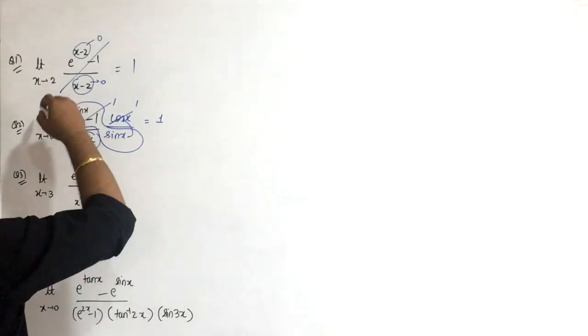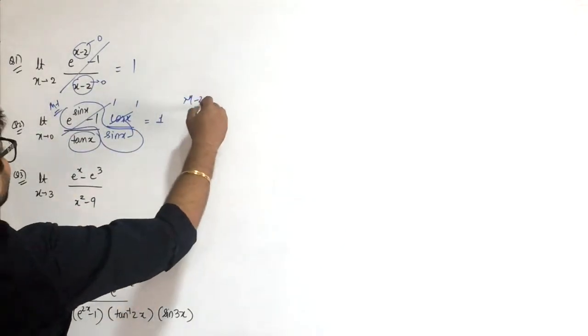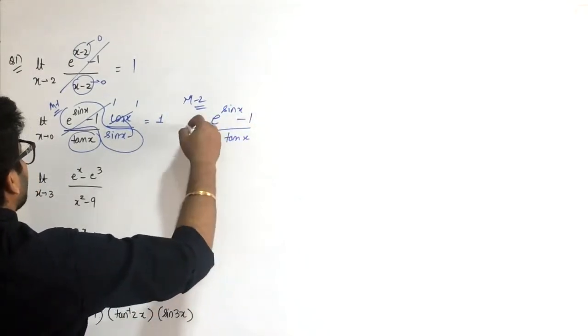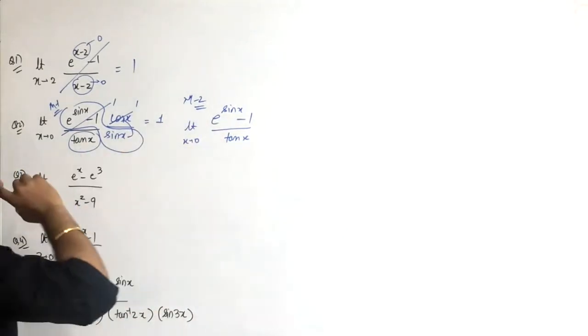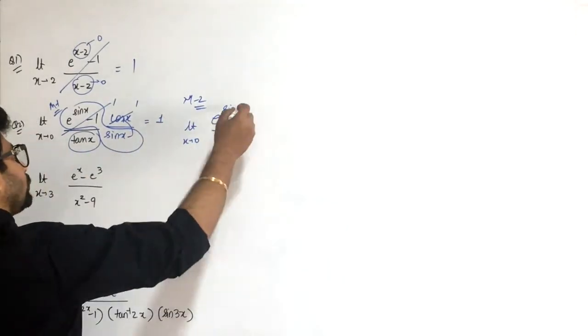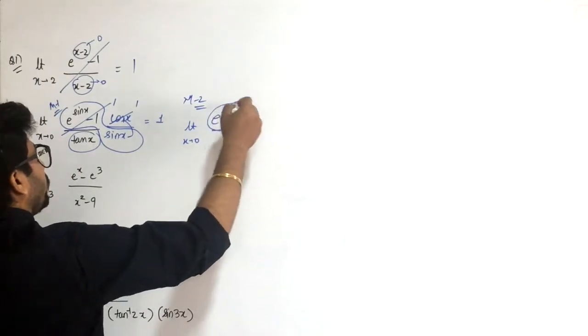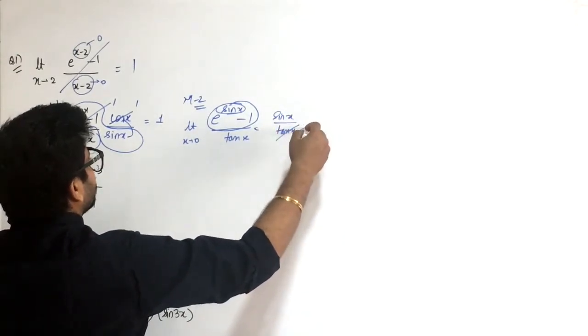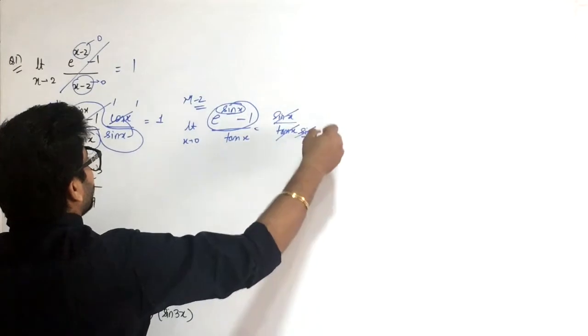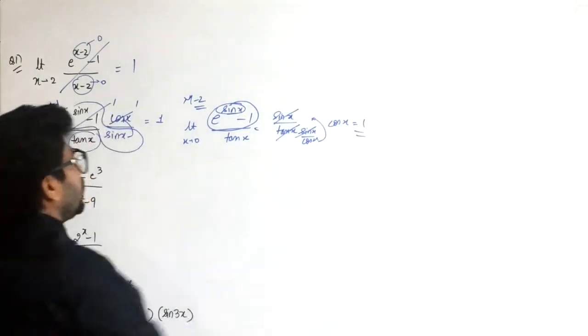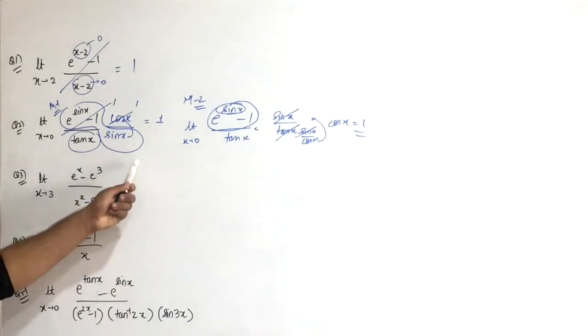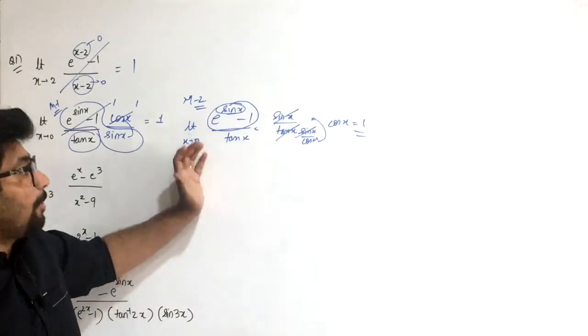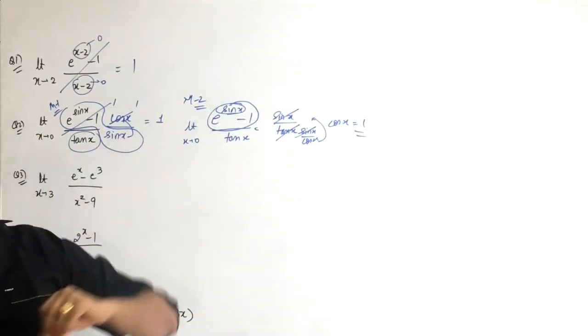That was method one. Method two is the shortcut I taught you. When e to the power sine x minus 1 upon tan x is written, and x approaches 0, I can replace the story with sine x. So the question becomes sine x upon tan x, which is sine x upon sine x by cos x. Sines cancel, cos goes to the top, giving answer 1. See, using this line of thinking, the answer comes quickly. As questions get more difficult, using shortcuts will help, but you need to be careful.